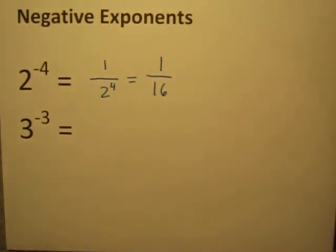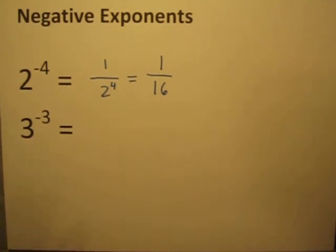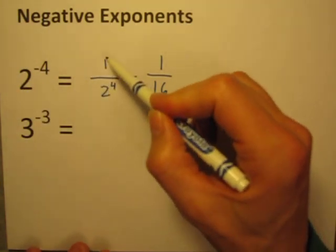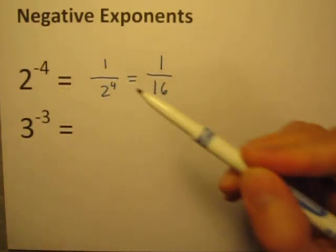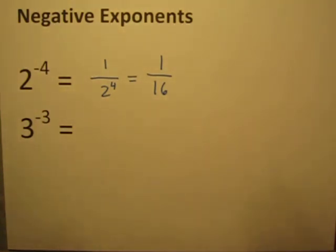And somewhere along there you start to think — what? What was that explanation? What are all these weird, strange rules? I'm supposed to turn it into a fraction with a 1 on the top and this on the bottom, but I get rid of the negative sign, and it doesn't make sense. It's like someone's just making up strange rules.